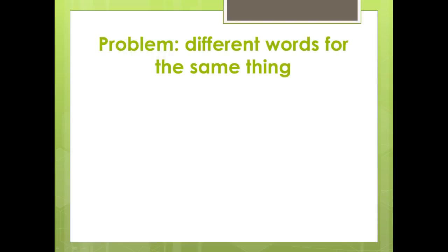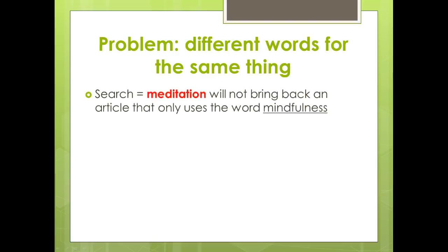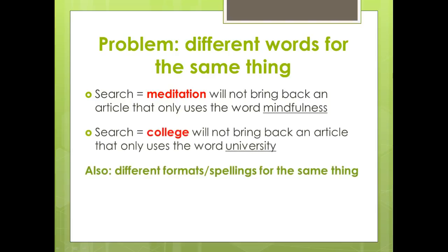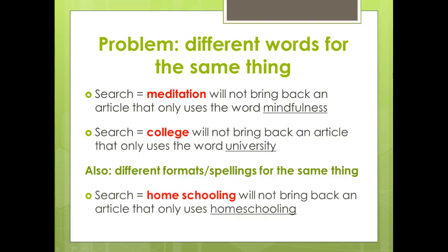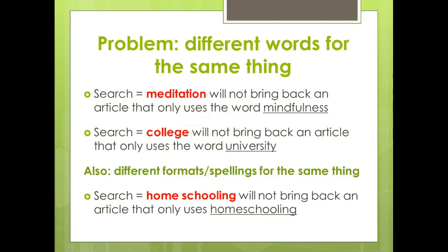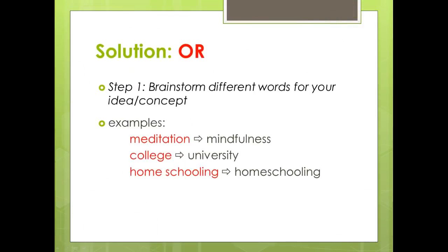Another problem we saw is that we have different words for the same thing. For example, a search for meditation didn't bring back a match on a similar word like mindfulness. A search for college would not find a match on the word university. Also, we sometimes have different ways of spelling the same word — homeschooling can be two words or one word. There is a way around that, and that is the search command OR.